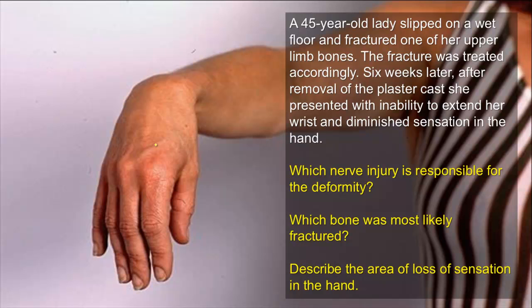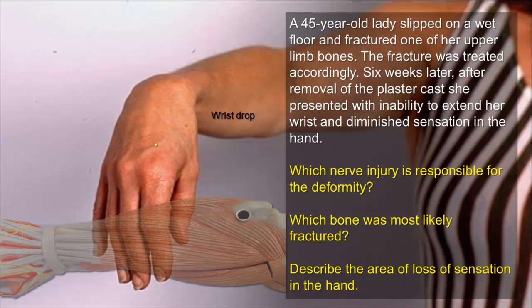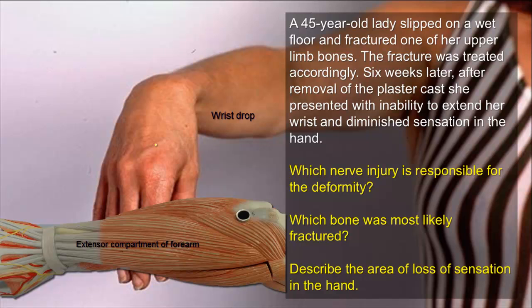This is a wrist drop deformity resulting from paralysis of the muscles of the extensor compartment of the forearm. These muscles are supplied by a branch from the radial nerve, the nerve of extensor compartments. The wrist cannot be extended and it drops by the action of gravity when these extensor muscles are paralyzed.